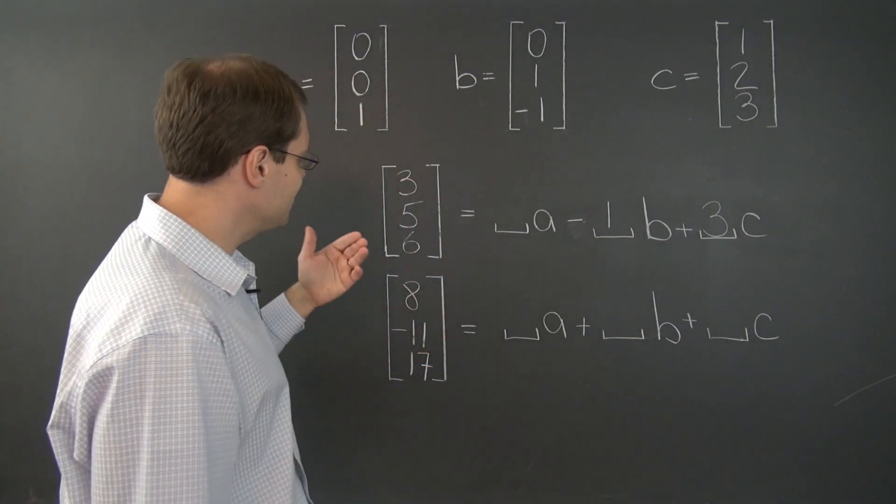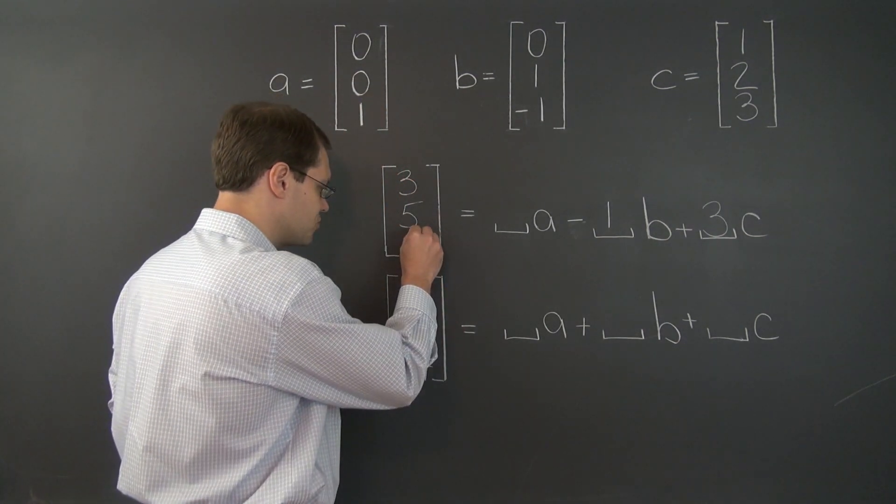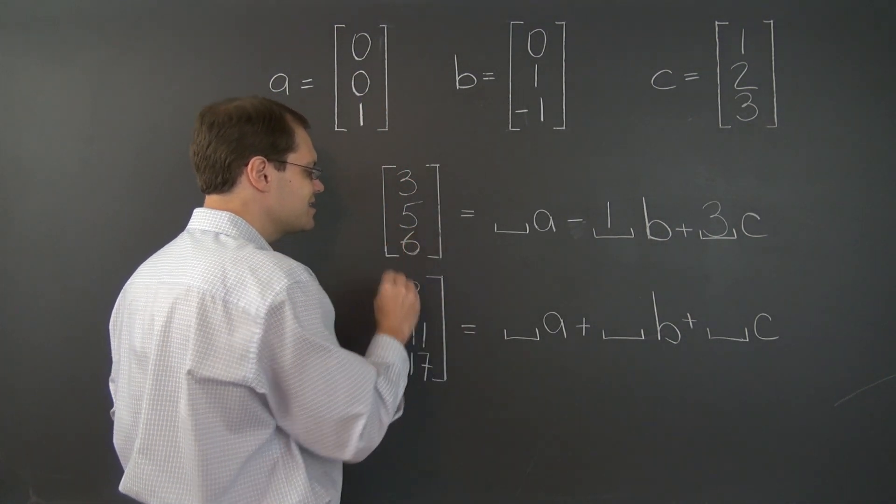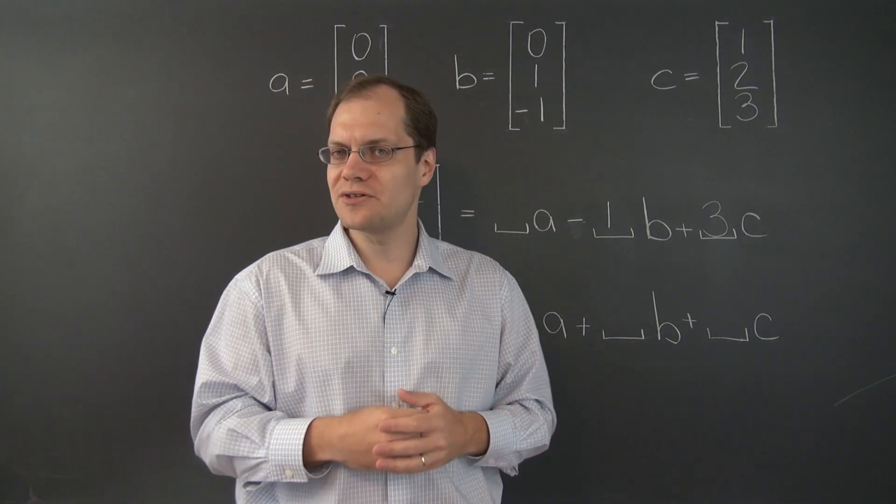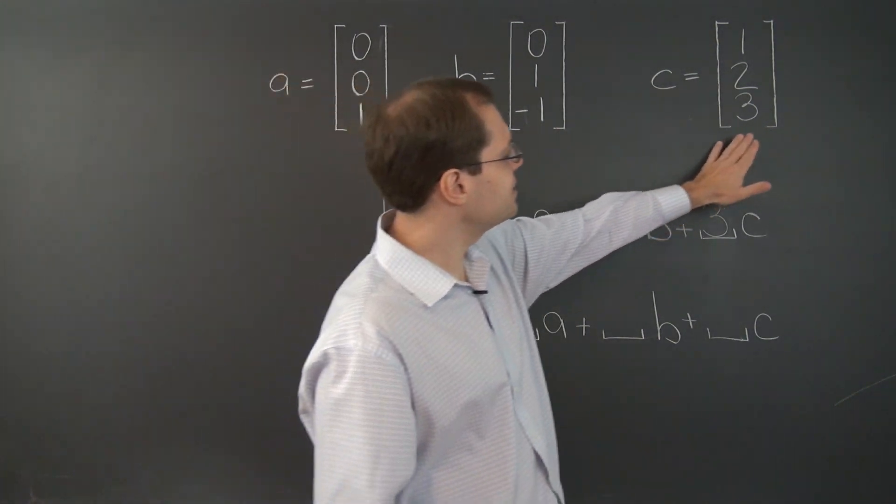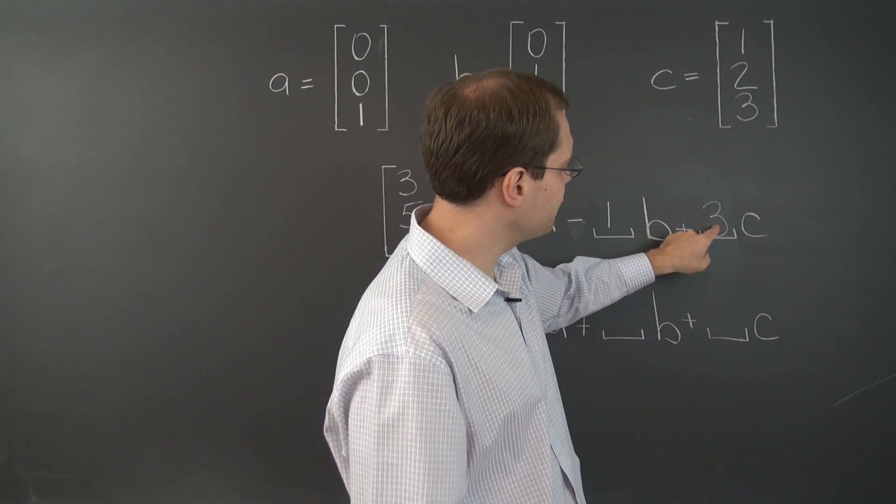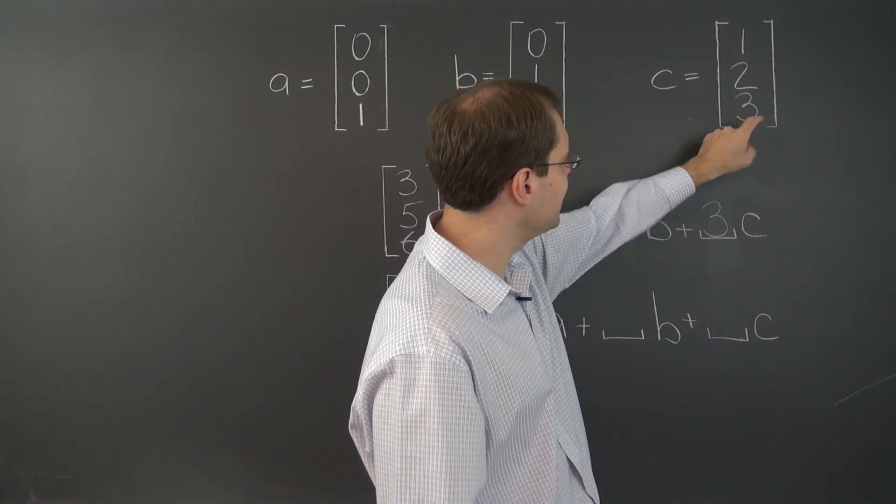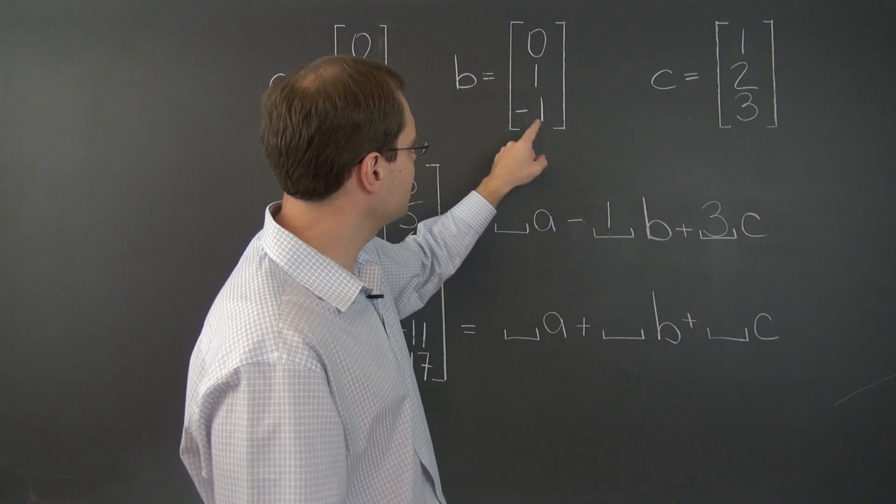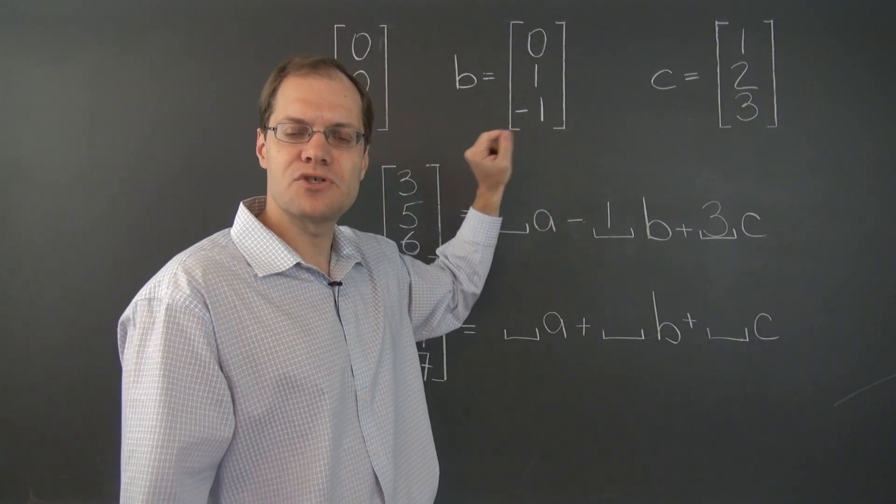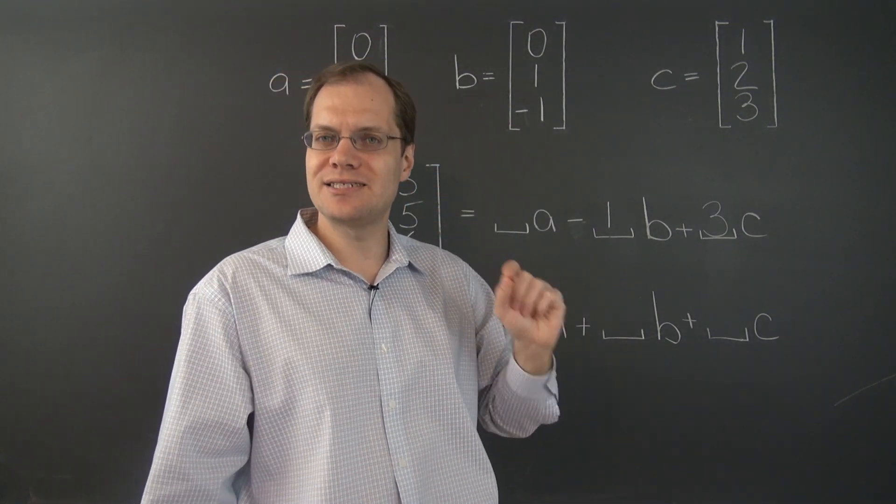Because we now need to get the last entry right. And let's see what our contributions to the last entry so far are. Well, from this vector, it's nine. Because we have three of C. So it's nine. Minus one of B. So it's one. So we're currently sitting at ten.